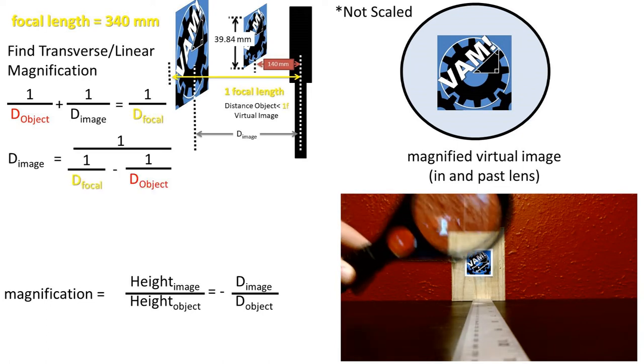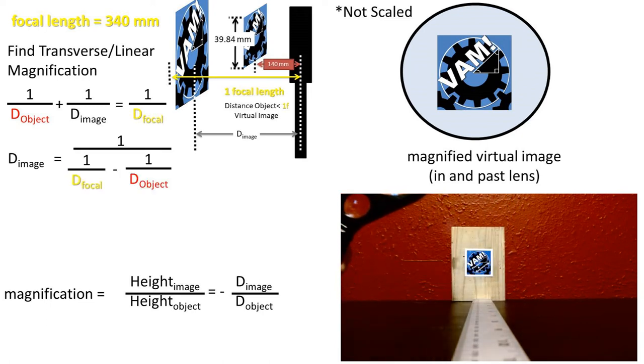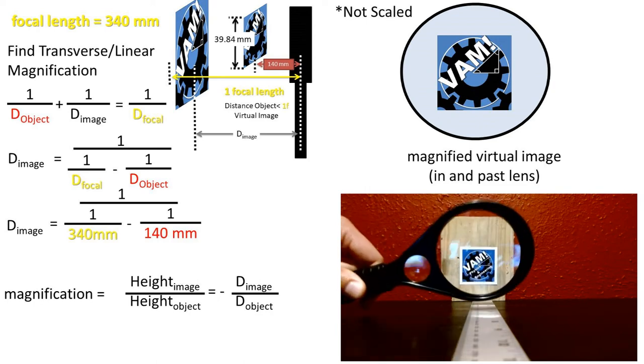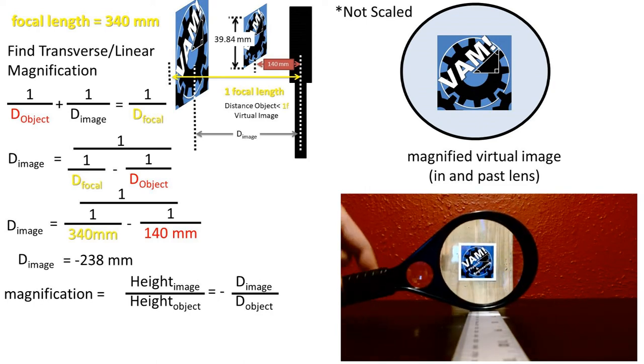We can rearrange the thin lens formula to get distance to the image to one side. Plugging in the numbers, we get a distance to the image of negative 238 millimeters. The negative indicates that it is a virtual image. If it would be positive, then it would be a real image.